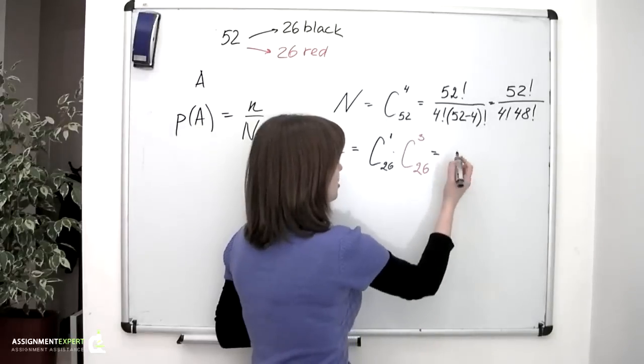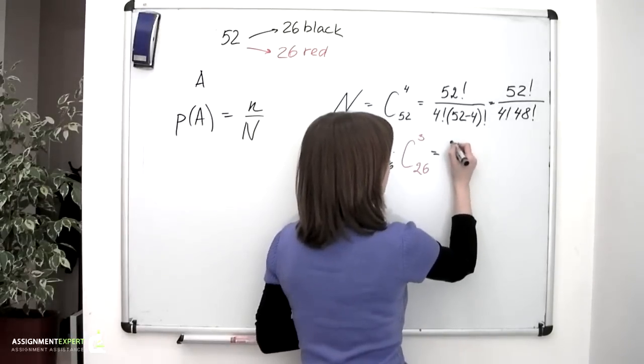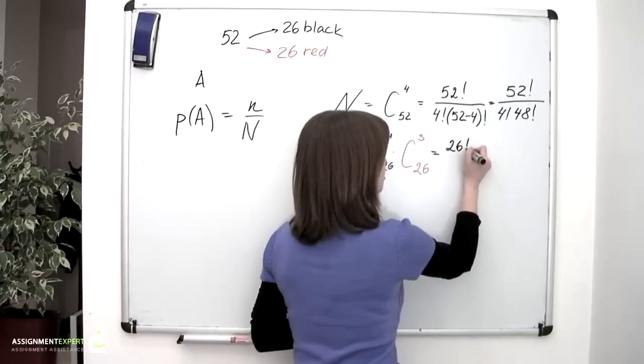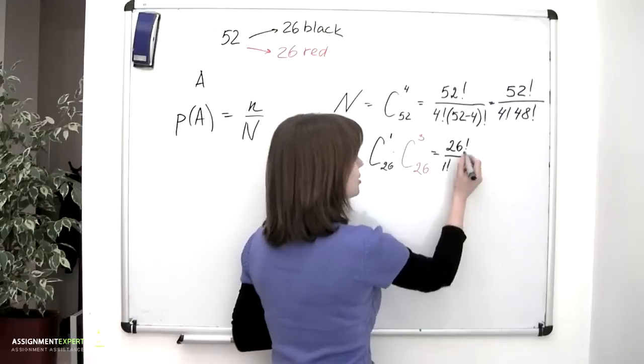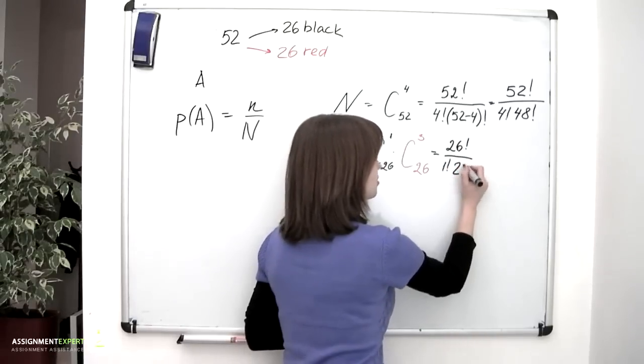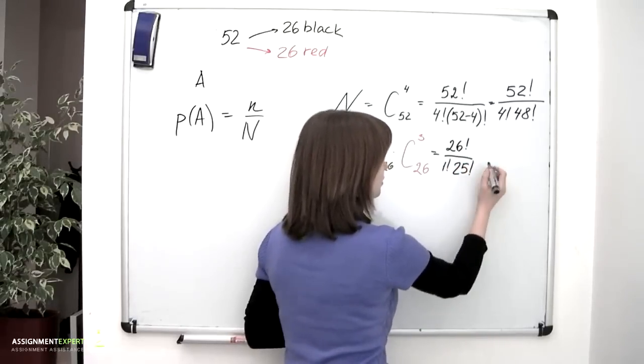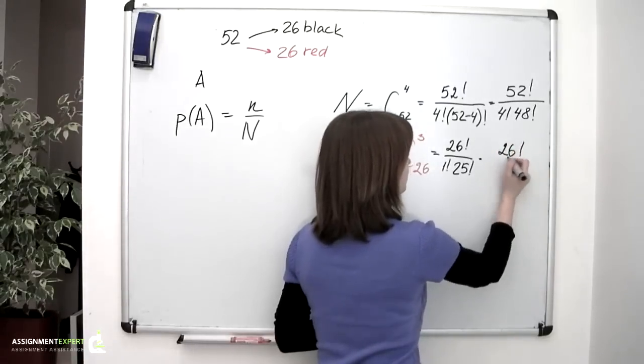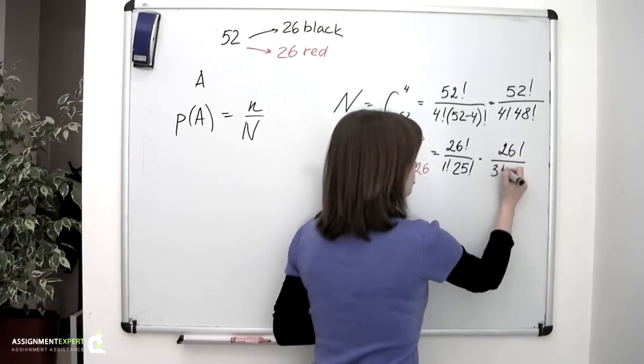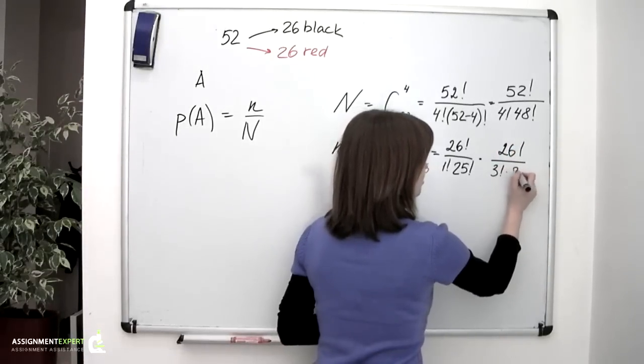which is equal to 26 factorial divided by 1 factorial times 26 minus 1, which is 25 factorial, multiplied by, again, 26 factorial over 3 factorial times 23 factorial.